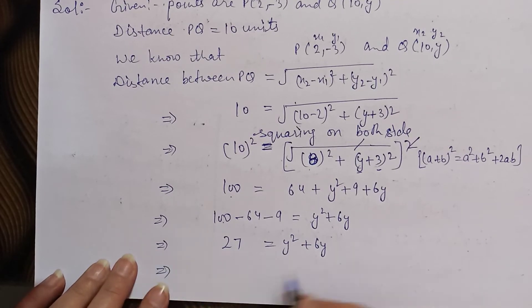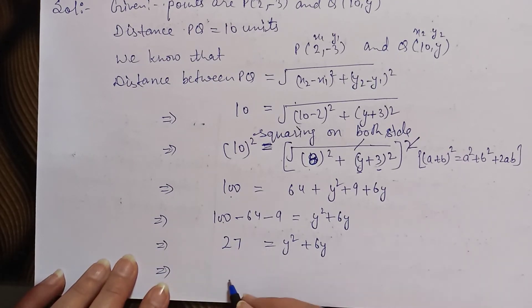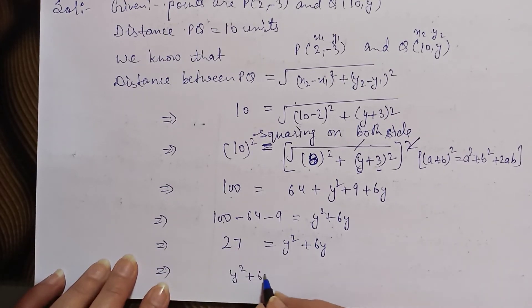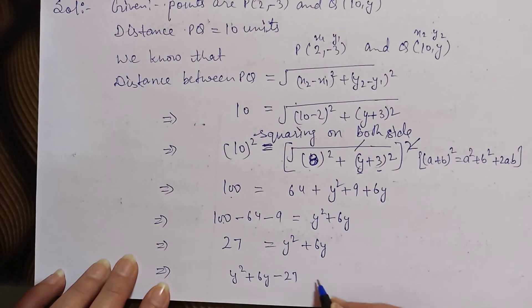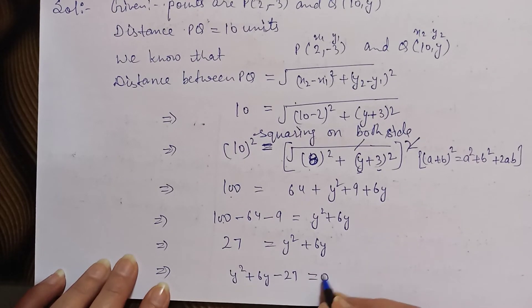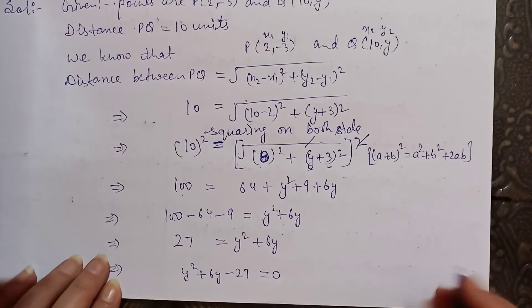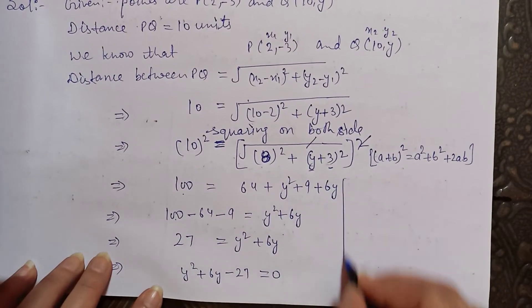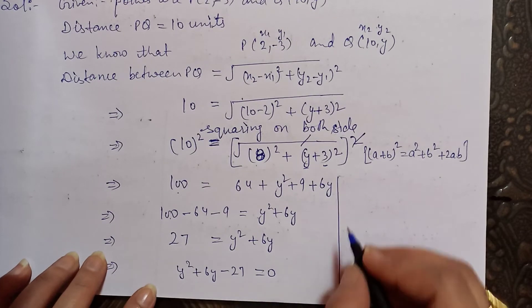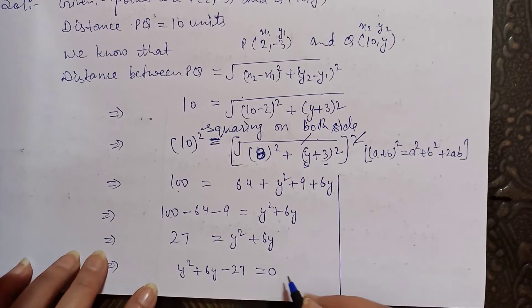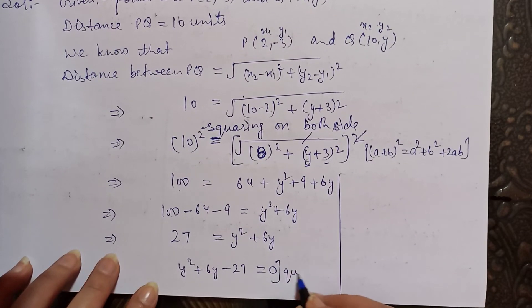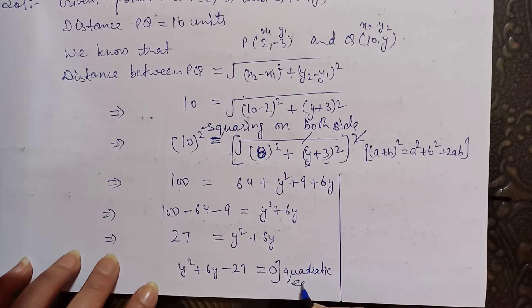So here we take it to this side. y² + 6y - 27 is equal to 0. Now here we will have a quadratic equation. Which equation? A quadratic equation.